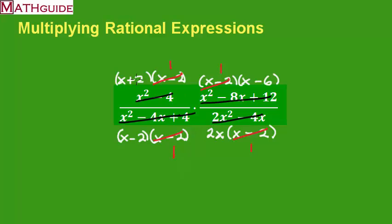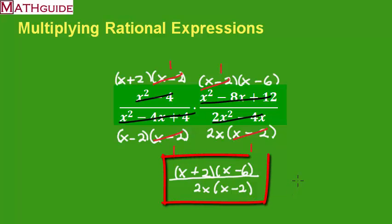So there's really nothing else to cancel for this problem. So I'm left with a bunch of factors. So what are the factors that are left? Let's see. In the numerator, I'm going to have an x plus 2 and an x minus 6. x plus 2, and I have an x minus 6. Let's see. Now what's left in the numerator? I have a 2x and an x minus 2. There you have it. There's my final answer for that problem.